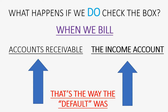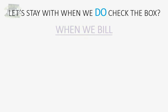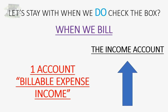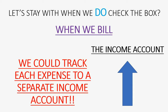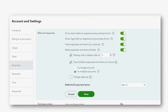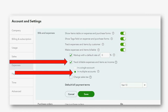But by default we only had one income account for all of our billable expenses. When we bill, the income account goes up, and up until now we were using the account called 'Billable Expense Income' or something like that. But if we want to, we could track each expense to a separate income account, and QuickBooks allows us to do that by making sure that after we click the check mark to track billable expenses as income — which is the default — we can then change the default to tell QuickBooks we want to track different billable expenses into different accounts.